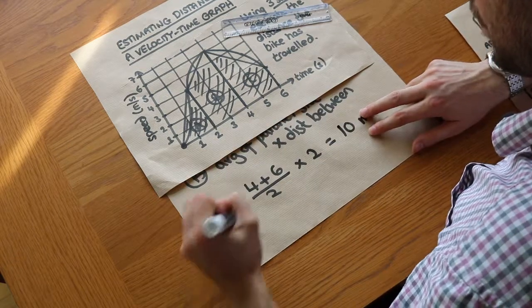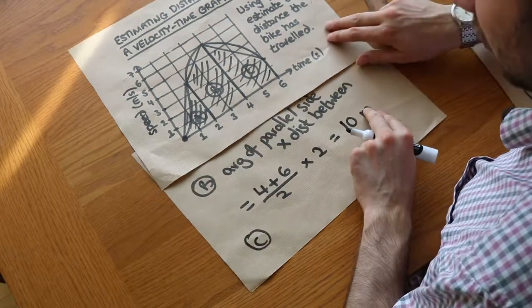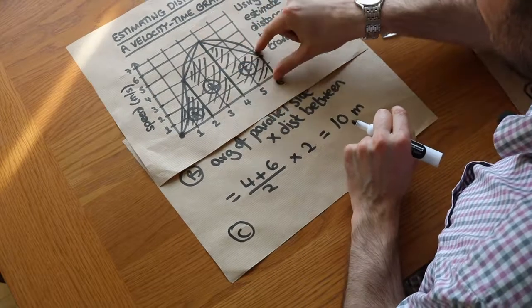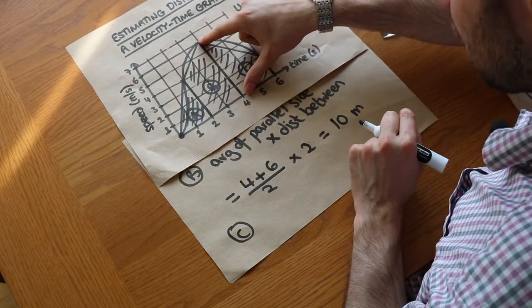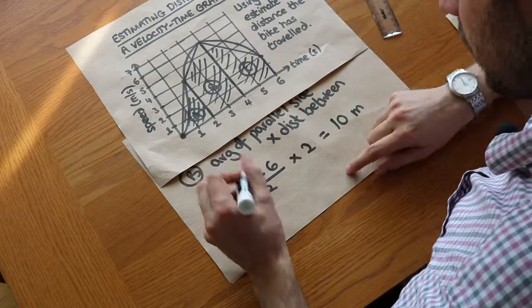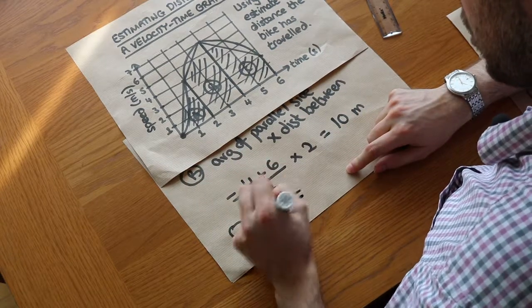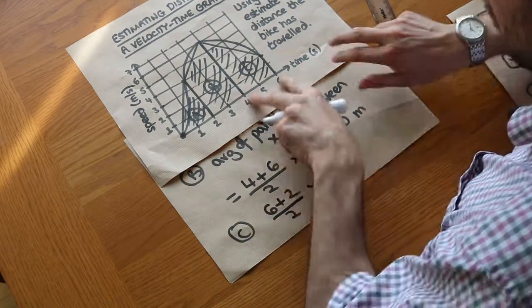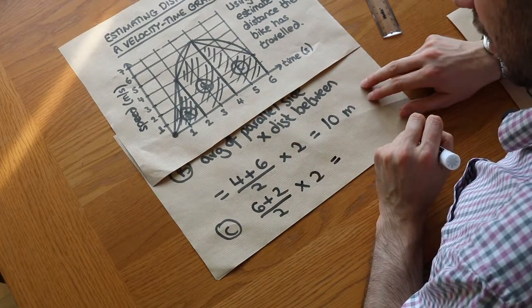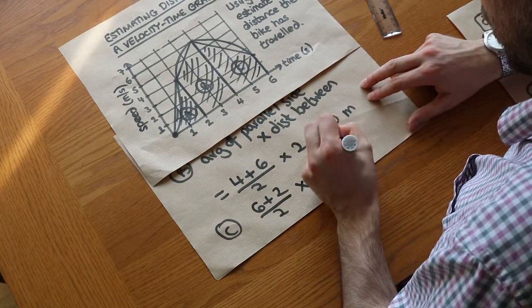And then finally c. We do the same thing. So we find the average of the parallel sides. So that's six plus two, divide by two because we can find the average of parallel sides, times the distance between them. And that gives us eight meters.